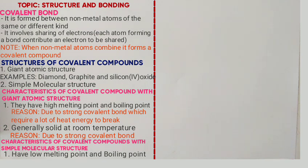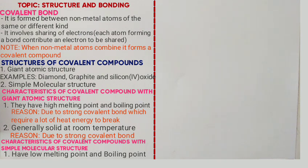We have two types of intermolecular forces of attraction: hydrogen bonds and van der Waal forces. Hydrogen bonds are found in compounds in which oxygen is bonded to hydrogen, nitrogen, or chlorine. Examples include water and ethanol. Compounds which have hydrogen bonds usually have high melting and boiling points, because hydrogen bonds are always stronger than van der Waal forces. That is why water has a higher boiling point than carbon dioxide — because the water molecules are held by hydrogen bonds, which are stronger than the van der Waal forces in carbon dioxide.